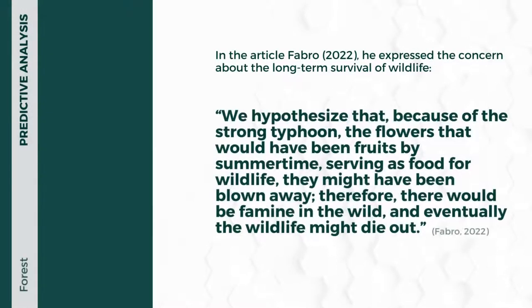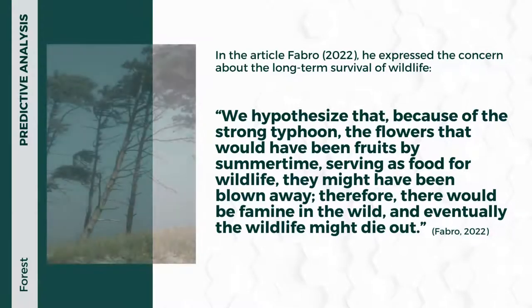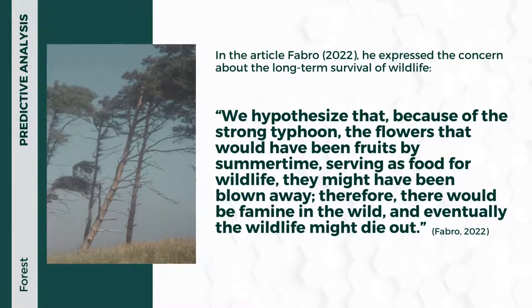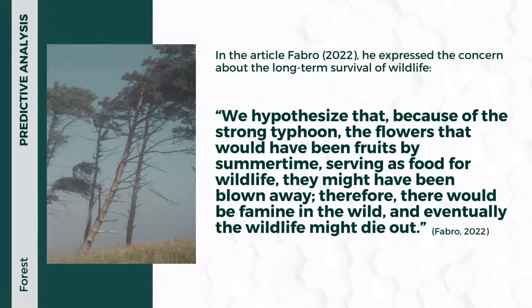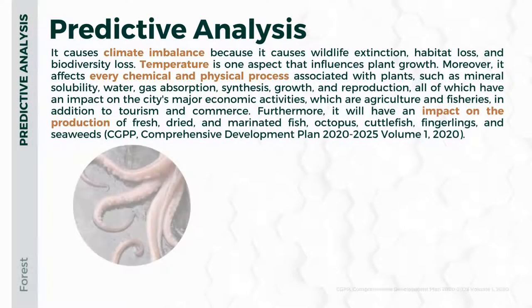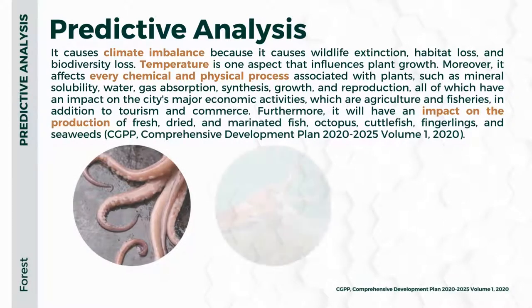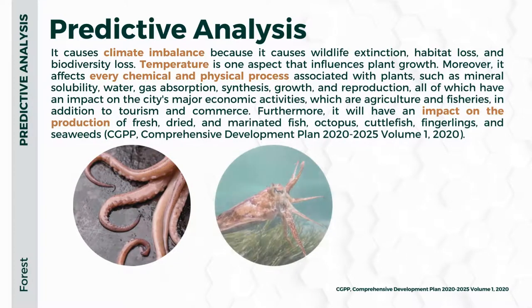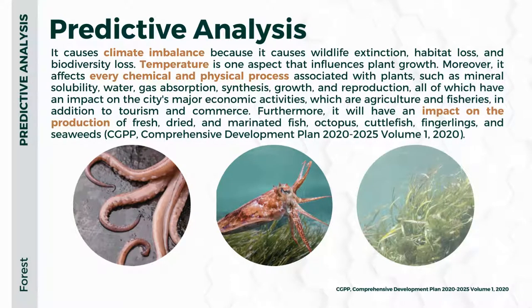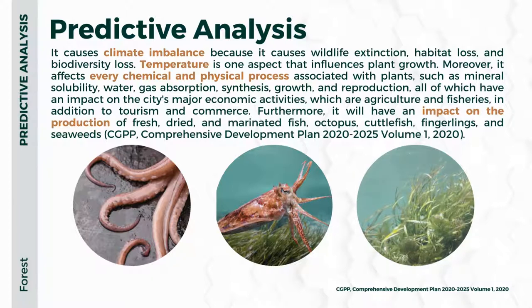Wildlife suffers as a result of habitat destruction. Fabro in 2022 expressed concern about long-term wildlife survival, hypothesizing that typhoon winds blew away flowers that would have been fruits serving as food for wildlife, potentially leading to famine in the wild and eventual die-off. A typhoon causes climate imbalance through wildlife extinction, habitat loss, and biodiversity loss. Temperature influences plant growth, affecting mineral solubility, water and gas absorption, synthesis, and reproduction — all impacting Puerto Princesa's major economic activities of agriculture, fisheries, tourism, and commerce, including production of fish, octopus, cuttlefish, fingerlings, and seaweeds.